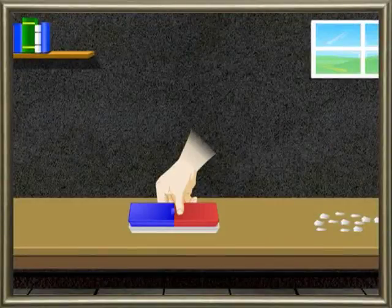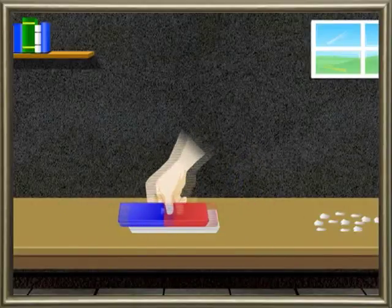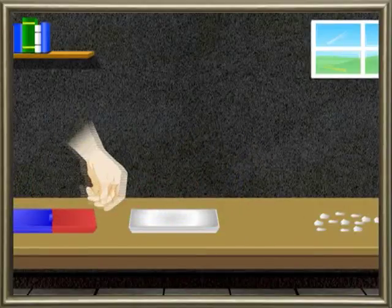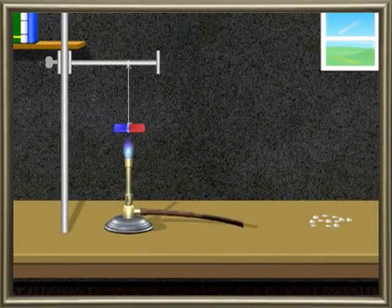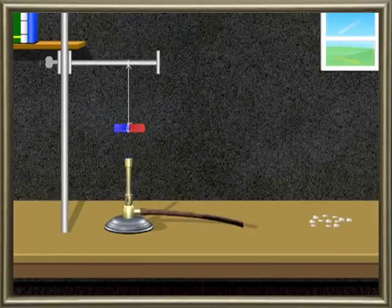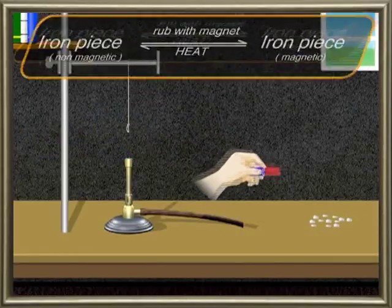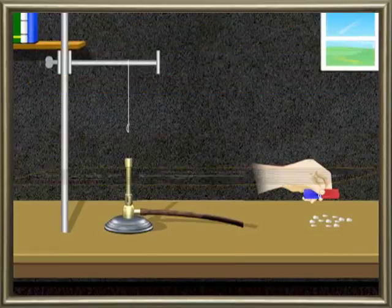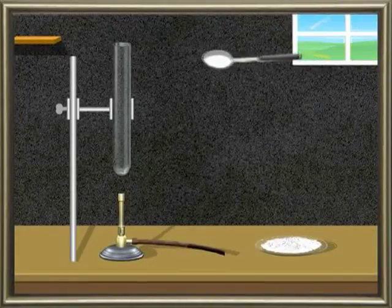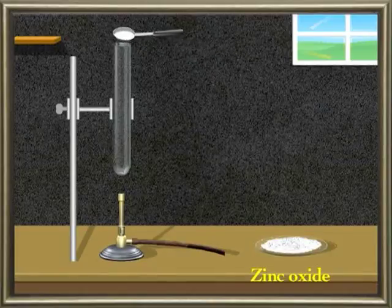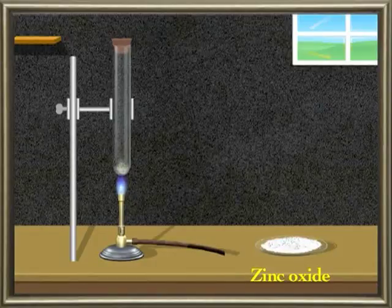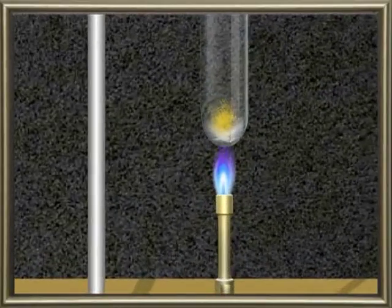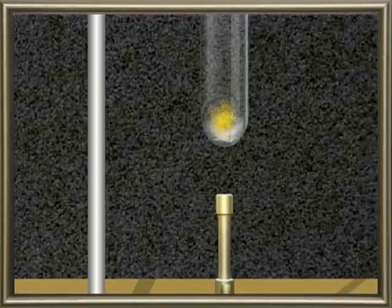When a piece of iron is rubbed against a magnet, it tends to behave like a magnet and starts attracting iron pieces. On heating, the piece of magnet loses its magnetic property and becomes just a piece of iron again. Take a pinch of powdered zinc oxide in a dry test tube and heat it gently. It does not melt or give out a gas but turns yellow. Cool the test tube — you can see the yellow colour vanishing and becoming white.